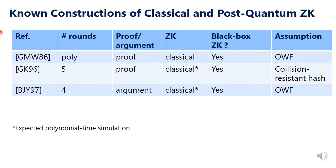I'd like to review constructions of classical and post-quantum zero-knowledge protocols — this is not an exhaustive list, just the most related work. The first zero-knowledge proof for NP languages was proposed by Goldreich-Micali-Wigderson, based on one-way functions. However, the round complexity of this protocol is polynomial. As constant-round protocols, there are those by Goldreich-Kahan and Bellare-Jacobsen-Yung: five rounds based on collision-resistant hash, and four rounds based on one-way functions (argument only). This is the state of the art in the classical setting.